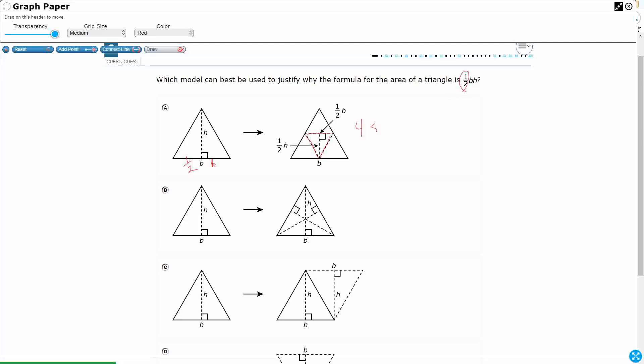Because it really doesn't show why we're at this one-half. This is just four small triangles equals one large triangle. That doesn't help me with the one-half base times height.